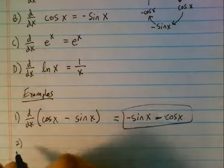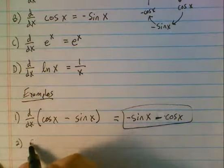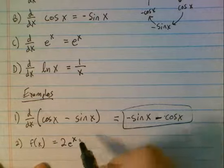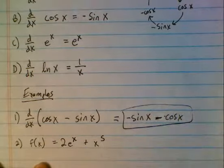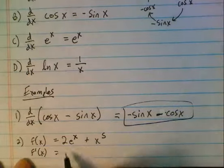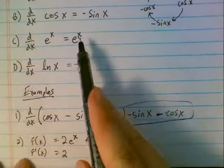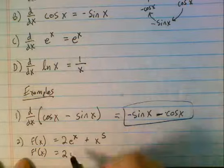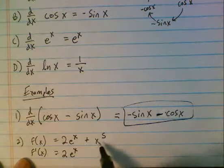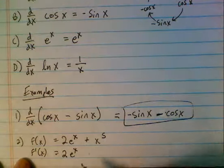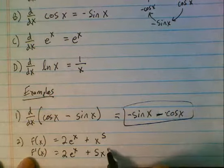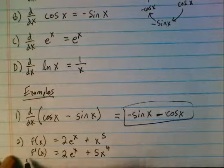In a similar vein, let's say that we have the function f of x equals 2e to the x plus x to the fifth. If we want to find the derivative, this 2 is along for the ride, and we have to remember that the derivative of e to the x is just itself. For x to the 5th, we bring down the 5 and subtract 1 from the exponent.